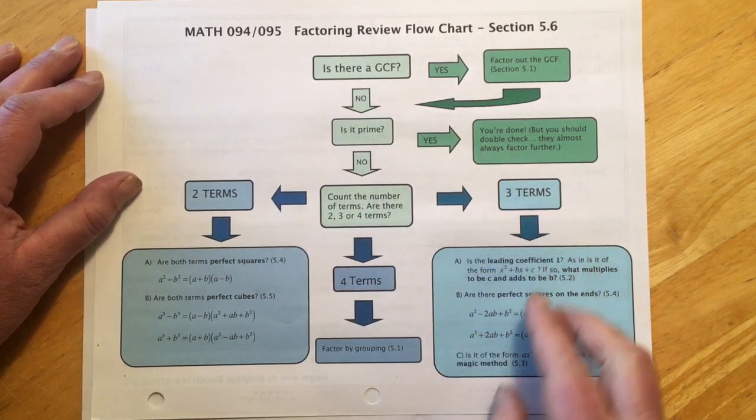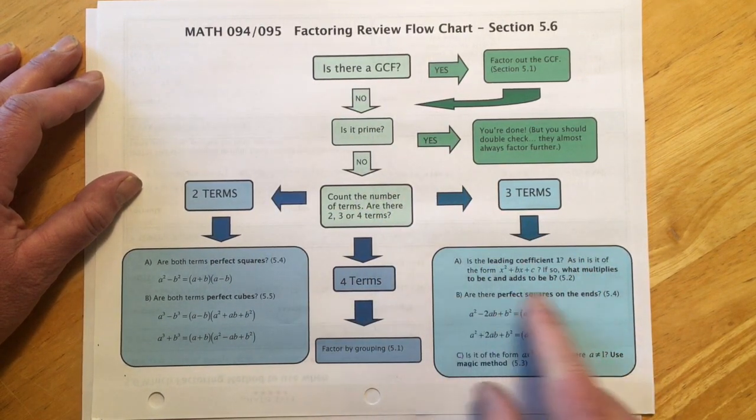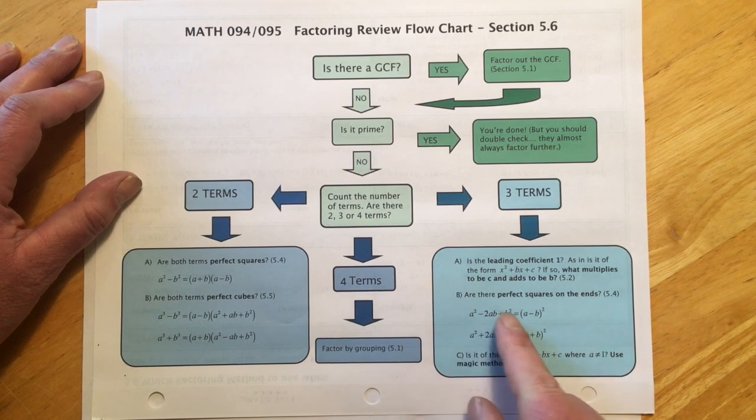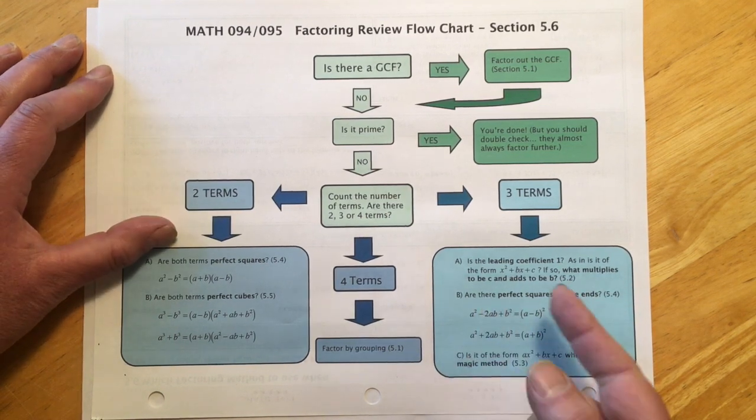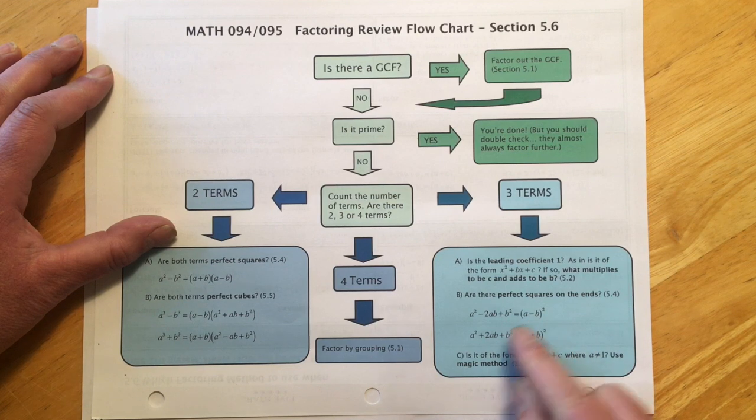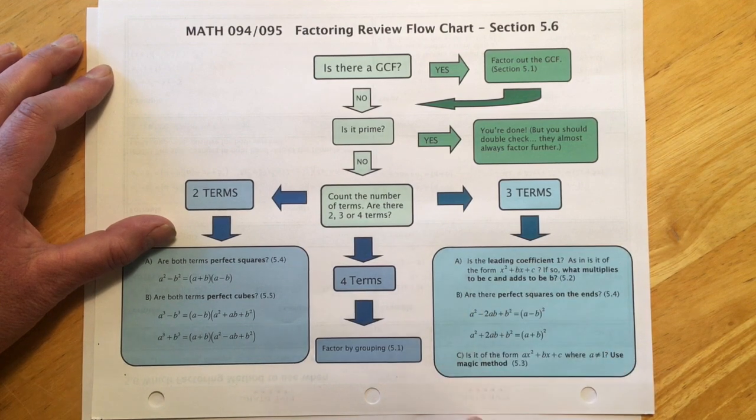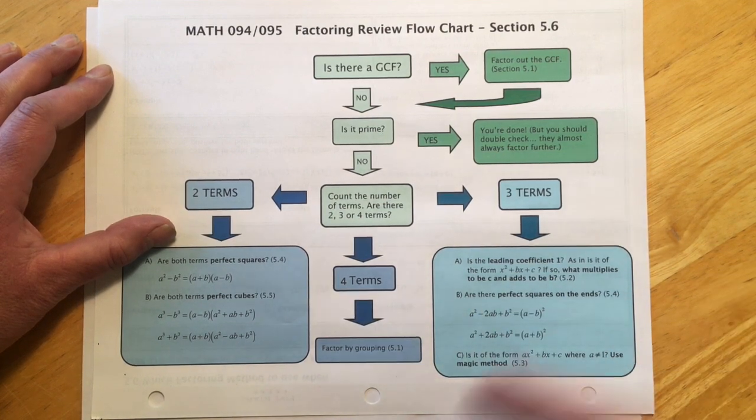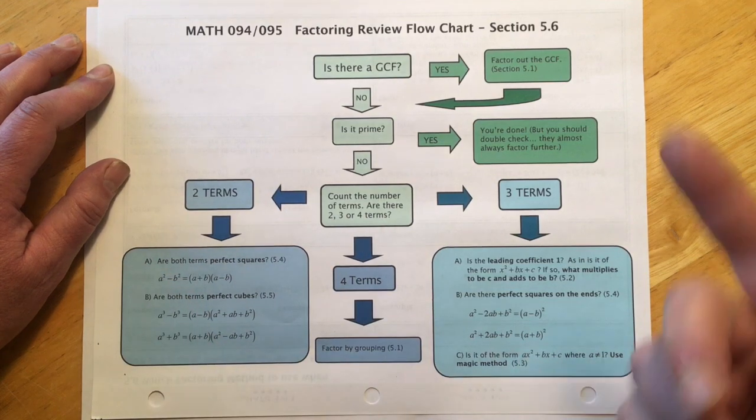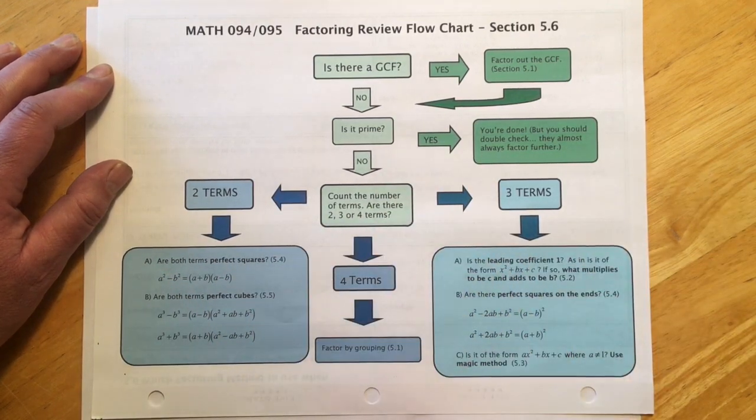For this section, if it has three terms, it's going to be the kind with squares on the ends. If you see squares on the ends, we're going to assume it's one of these and then do a little check to make sure it was. It's easier to check than to do it the harder way and then see that it was.